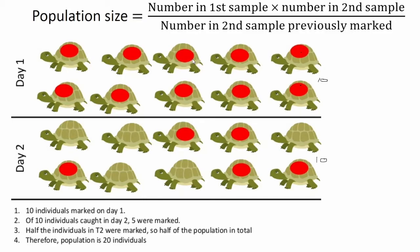In reality the marks would be a lot smaller than this. Then we're going to release them back into the wild and wait. And then on day 2 we're going to take 10 more turtles again. We've got 10 turtles — some of them have the red dots and some of them don't, which means some of them we've caught before on day 1 and some we haven't. Of the 10 caught on day 2, 5 of them are already marked with the red dot.